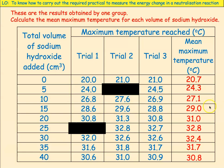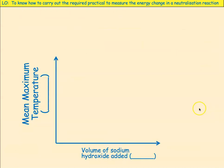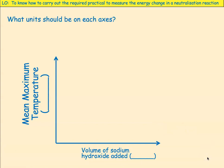When we get a set of results like this, we need to draw a graph. The x-axis will have our independent variable — the volume of sodium hydroxide added, in cm³ — and the y-axis will have the mean maximum temperature of the reaction, in degrees C.